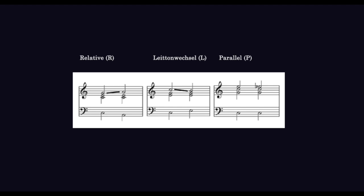The R transformation, the relative, moves the fifth of a major chord up a whole step, which means C major becomes A minor, or the root of a minor chord down a whole step, which means A minor becomes C major.